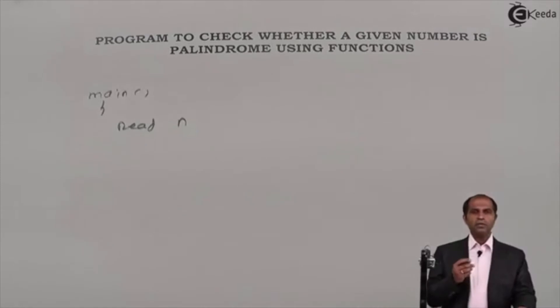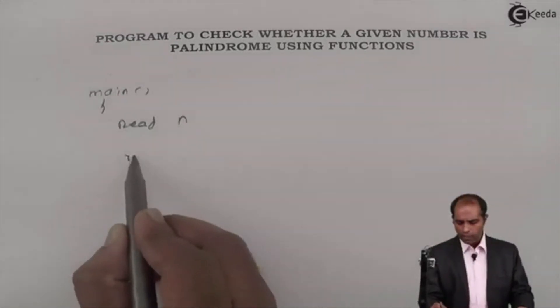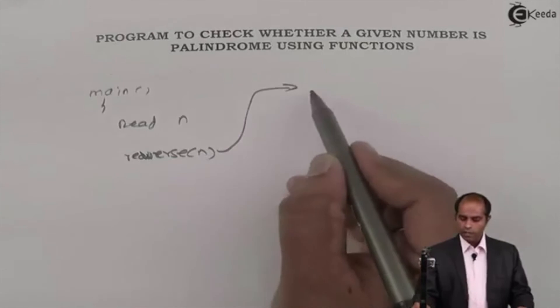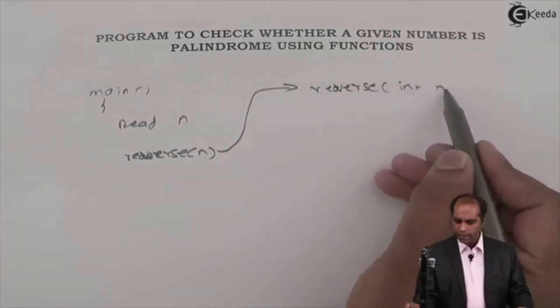So for that what I need to do is I need to first find the reverse of the number. So for that let me give a function call as reverse(n). So this will go outside and give a call to a function called as reverse, let me say int n.